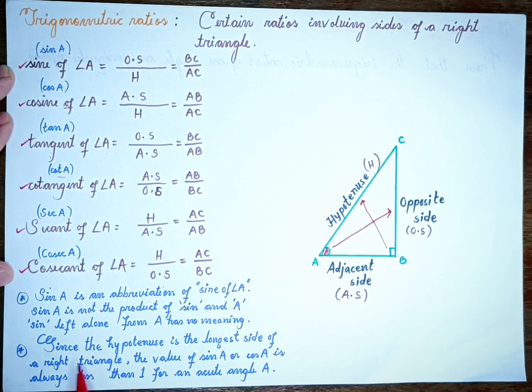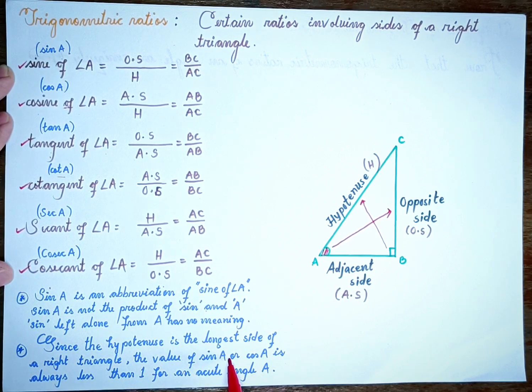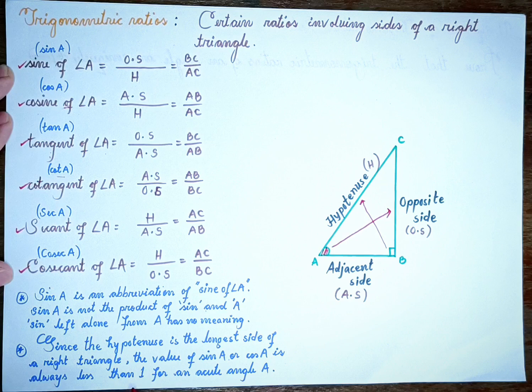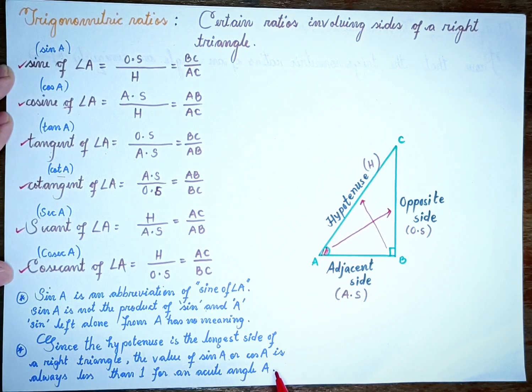Since the hypotenuse is the longest side of a right angle triangle, the value of sine A or cos A is always less than 1 for an acute angle A.